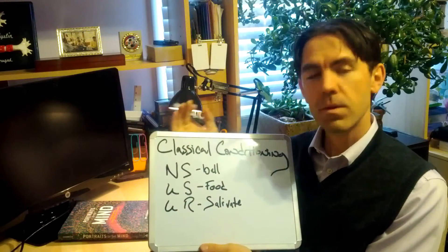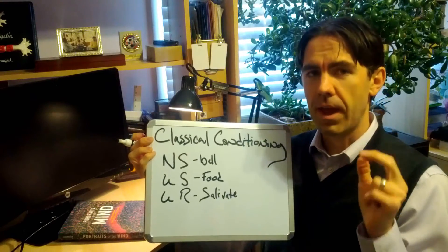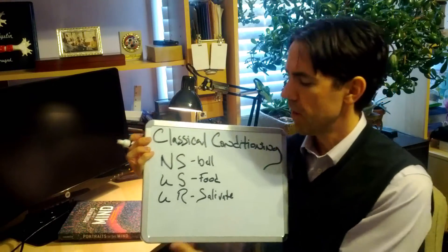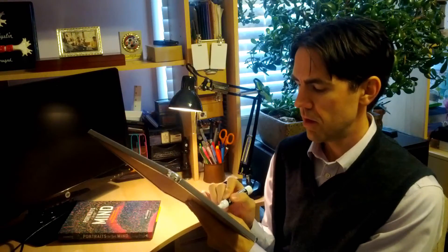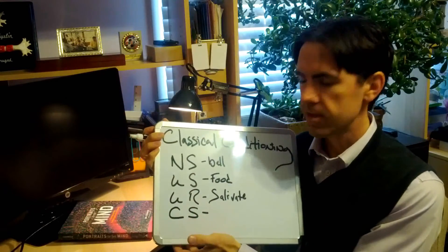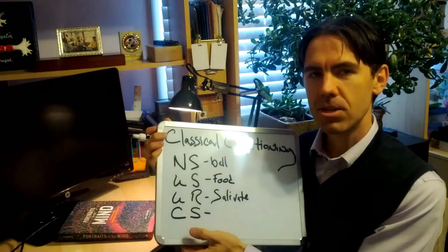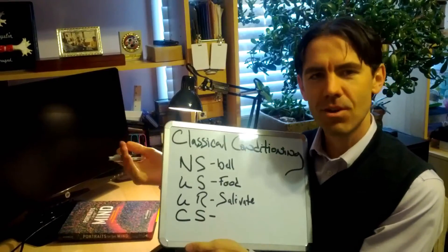The only other one that we need is the conditioned aspect. There's going to be two here. So we need the conditioned stimulus. C stands for conditioned. S stands for stimulus. And conditioned, that's the opposite of unconditioned. Conditioned means learned.